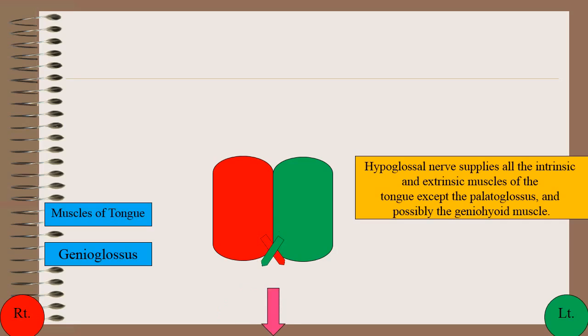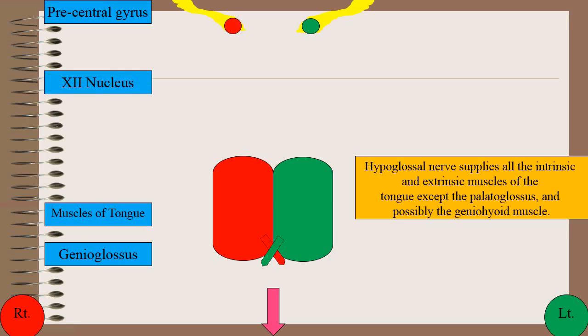Normally, the tongue is in neutral position. The cerebral center for tongue movements is located in the lower part of the precentral gyrus, and the hypoglossal nucleus is located in the medulla oblongata. The smaller cube indicates the nucleus for genioglossus and the larger cube indicates the nucleus for all other intrinsic and extrinsic muscles of the tongue.